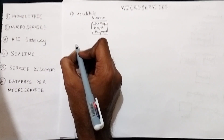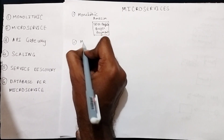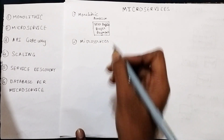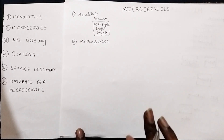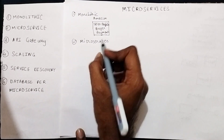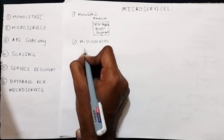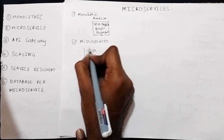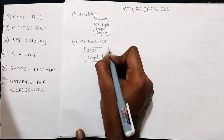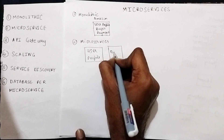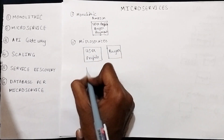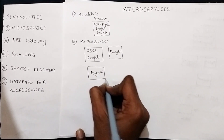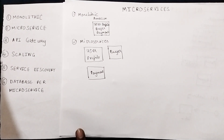Let's see what a microservice is — our second topic. In microservices, we have small applications and those small applications serve a specific purpose. For example, we create three microservices out of the one big monolithic application. These three microservices will be: the user profile microservice, the buyer-related microservice which manages all buying-related stuff, and the payment-related microservice. What we did is decomposed the monolithic application into three microservices.